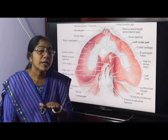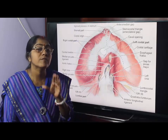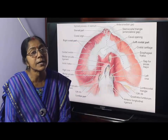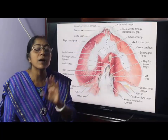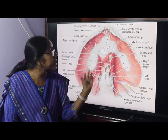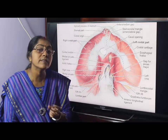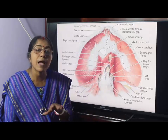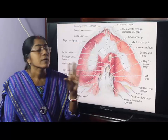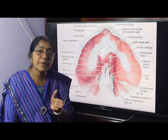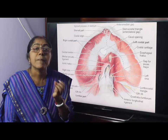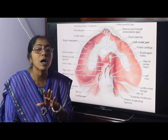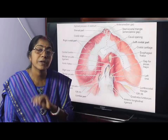The diaphragm is supplied by somatic nerves. Motor supply is derived entirely from the phrenic nerve — both the central and peripheral parts. For sensory supply, the central part is supplied by the phrenic nerve, while the peripheral part is supplied by the lower six or seven intercostal nerves, because developmentally the peripheral part arises from the mesoderm of the body walls.